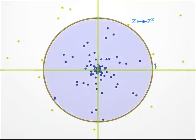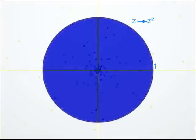One says that the blue disc is the filled-in Julia set of the transformation Z squared. Points outside the Julia set escape to infinity when one repeats the transformation indefinitely.